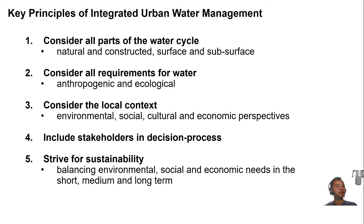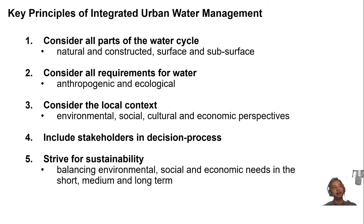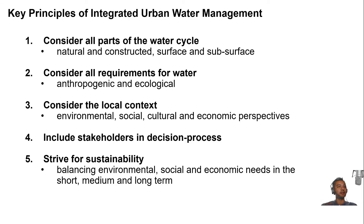There are five key principles for integrated water management: considering all parts of the water cycle — natural, constructed, surface, and subsurface — and how they interact; considering all water requirements for both human and ecological needs; looking at local context, since there is no one-size-fits-all solution; including all stakeholders including the community in decision-making; and striving for sustainability — balancing environmental, social, and economic needs in the short, medium, and long term.